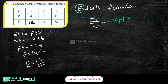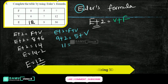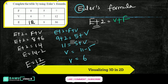For the next case: E + 2 = F + V. E is 9, so 9 + 2 = F + V. F is given as 5, and V is unknown. So 11 = 5 + V, therefore V = 11 − 5 = 6. The number of vertices is 6.